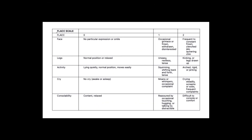The most common pain scale used in pediatrics is the FLACC scale, which stands for face, legs, activity, cry, and consolability. For each one of these categories, a patient may receive a score of 0, a score of 1, or a score of 2. The total possible pain score, when you add up all of the scores for each category, is 10.